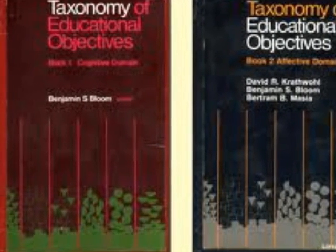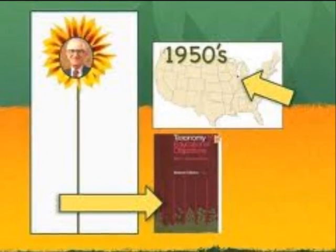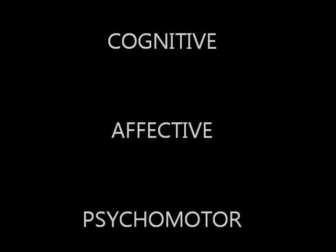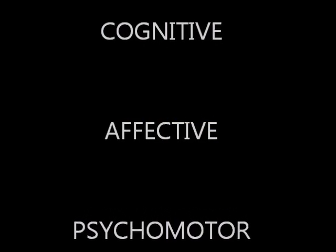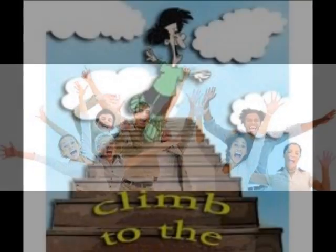Bloom's Taxonomy divides the educational learning objectives into three areas or domains: cognitive, affective, and psychomotor. The goal of Bloom's Taxonomy is to motivate educators to focus on all three areas, creating a more rounded form of education.